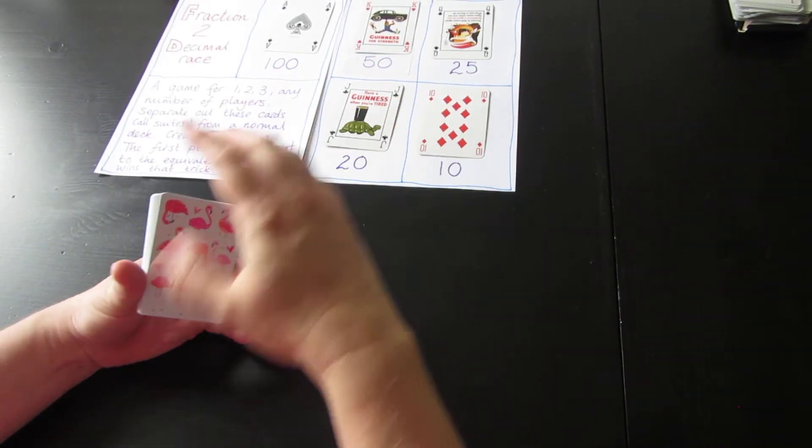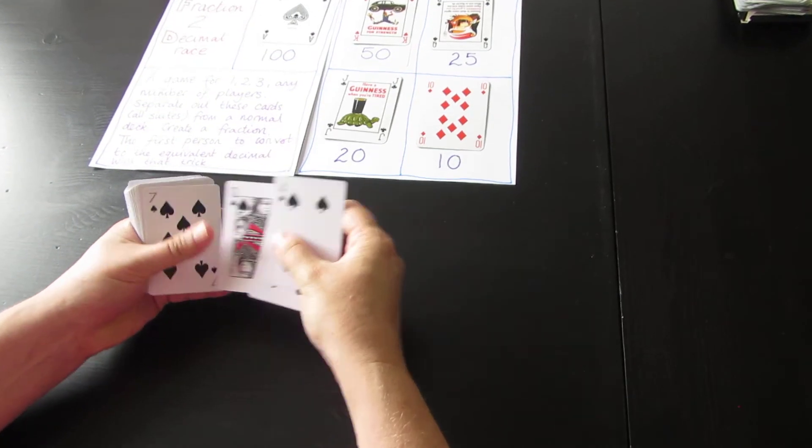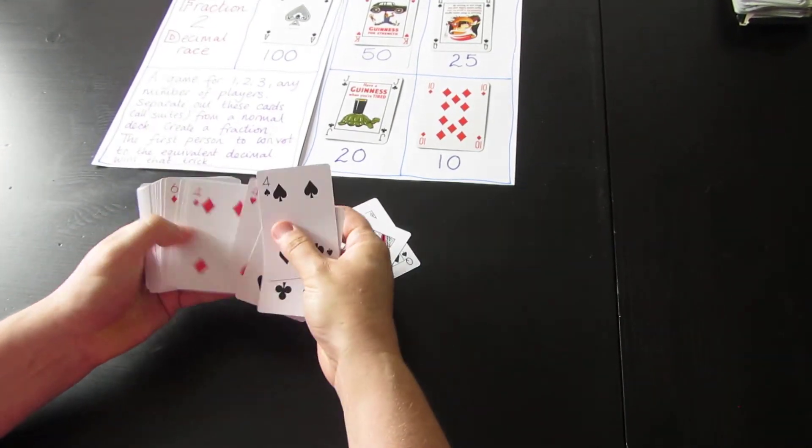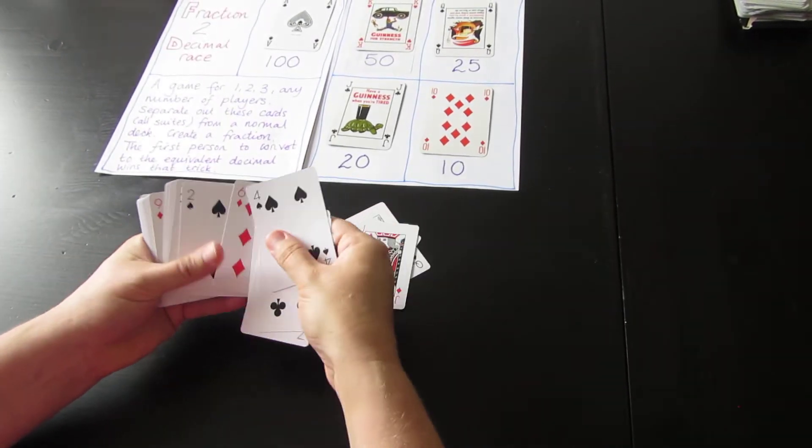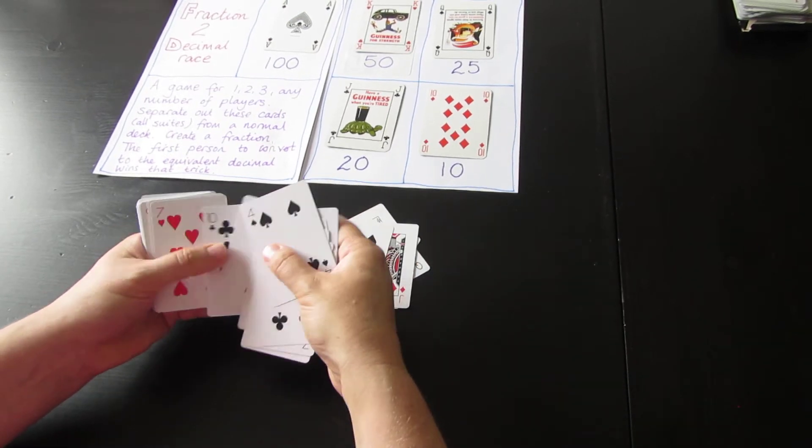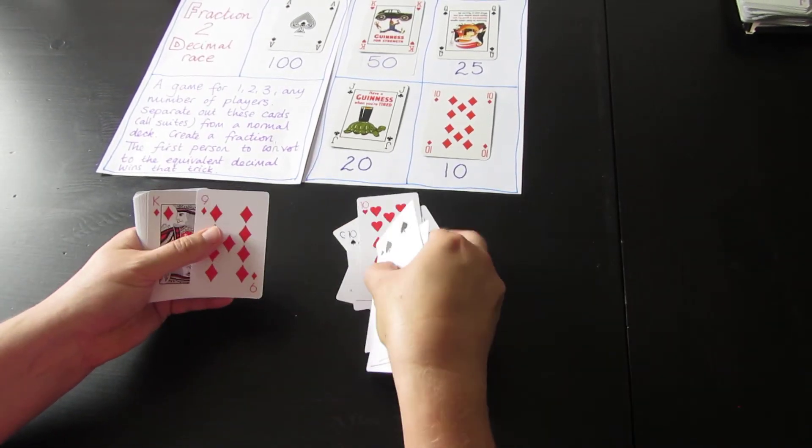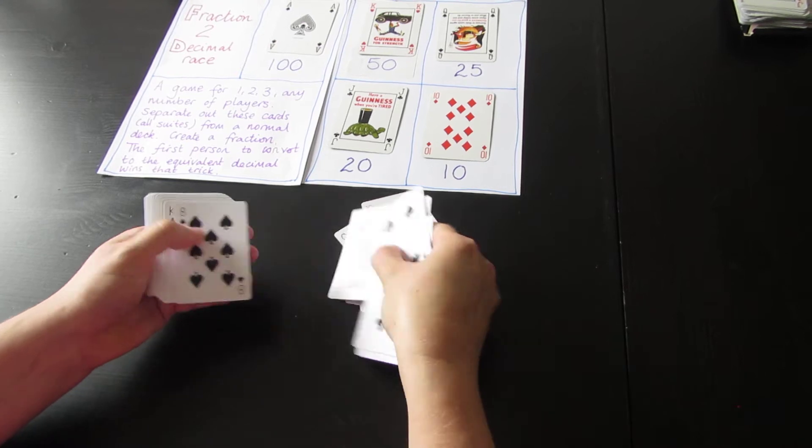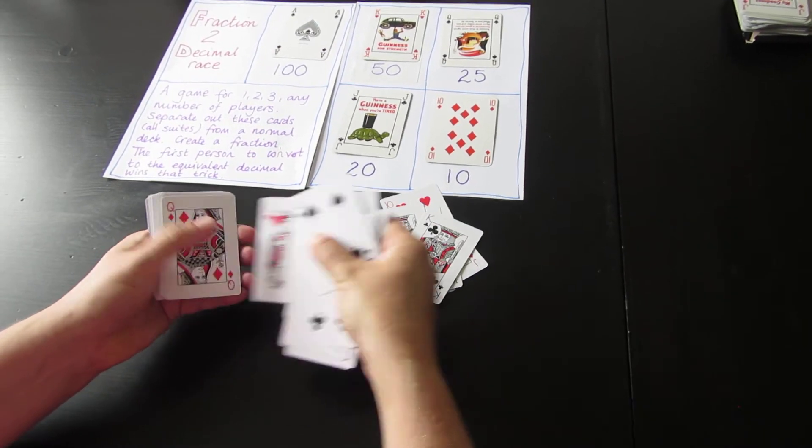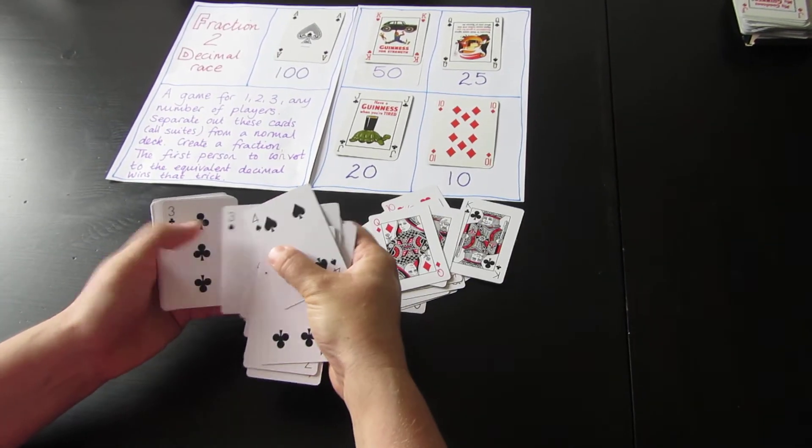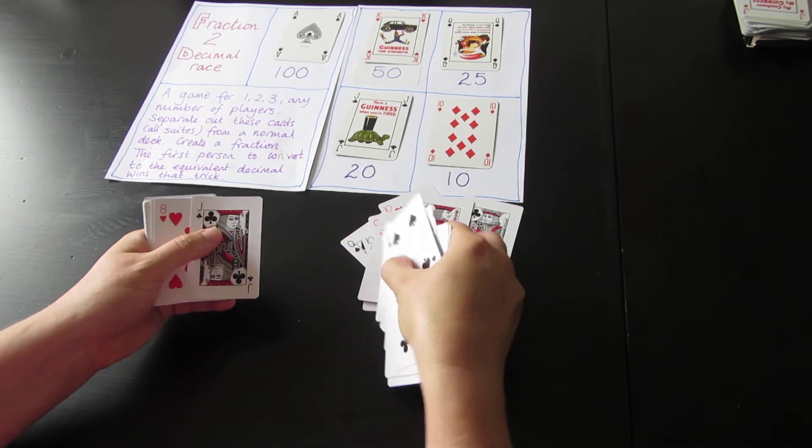...is to sort out all of these cards. You want all of the aces, kings, queens, jacks, and tens into a separate pile. As you should know, there should be four of each of those cards. I'm just going to quickly sort them out.